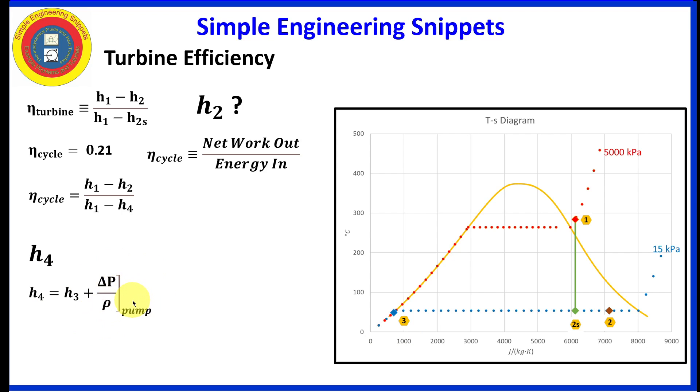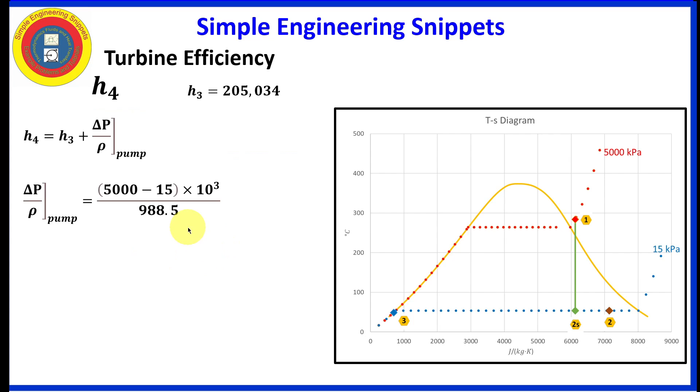Previously, when we were calculating cycle efficiency, we ignored that term. And we could do that again. We have enough information to calculate it. So let's go ahead and do that. And so plug in the values. And we obtained that the work input by the pump is 5043 compared to 205,000 for the enthalpy at point three. So yeah, it is quite small. Could ignore it. But since we have it, let's go ahead and use it. And so we calculate this value of 210,000 for the enthalpy at point four.